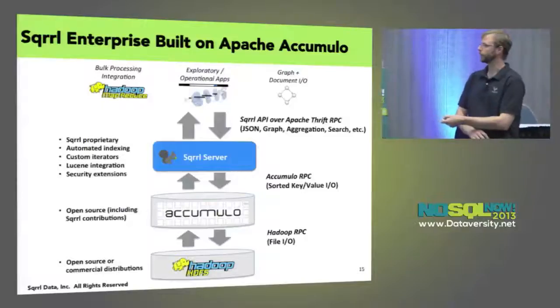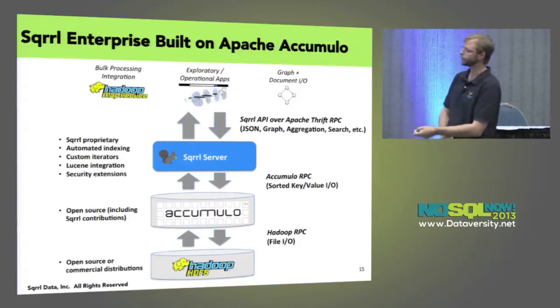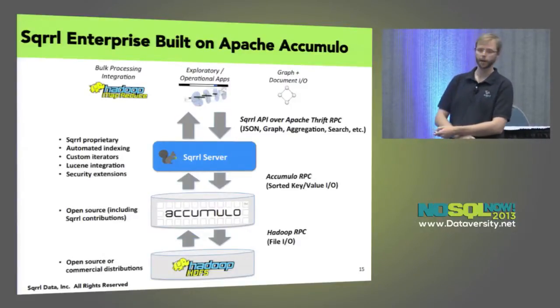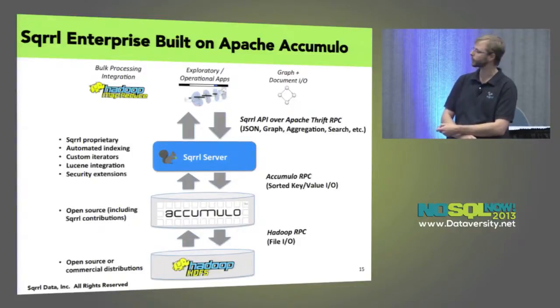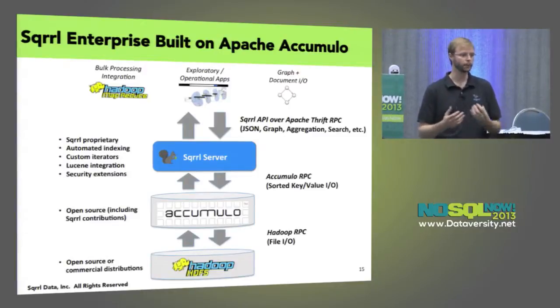Millisecond latency type things are good. Microsecond latency type things we can't support with this type of architecture — we're optimized for disk-based access, storing data that doesn't fit in memory, that type of thing. So effectively what we've talked about is this Accumulo layer. My company is Squirrel, and where Squirrel sits is in this stack — we've got HDFS at the bottom. Accumulo stores its data in HDFS and provides low-latency key-value I/O with high throughput.